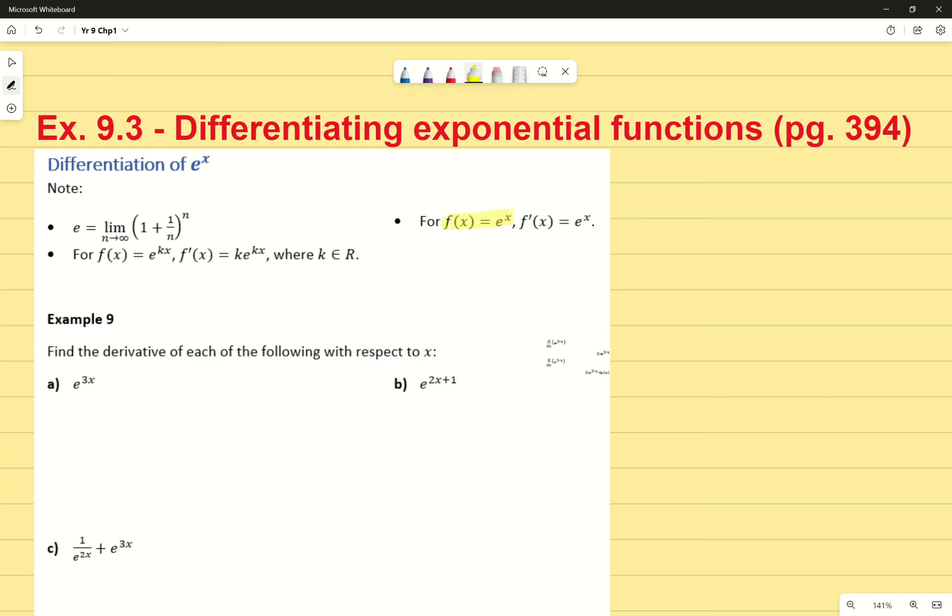First thing is, if we're given a function of e to the power of x, our f dash of x, or derivative of the Euler's number to the power of x, is just going to be e to the power of x. However, in this case, where if you have f(x) equals e to the power of kx, we're going to be applying our chain rule in the sense that f dash of x now equals k times e to the power of kx.